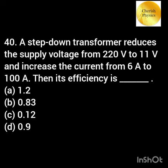A step-down transformer reduces the supply voltage from 220 volt to 11 volt and increases the current from 6 ampere to 100 ampere. Then its efficiency is?